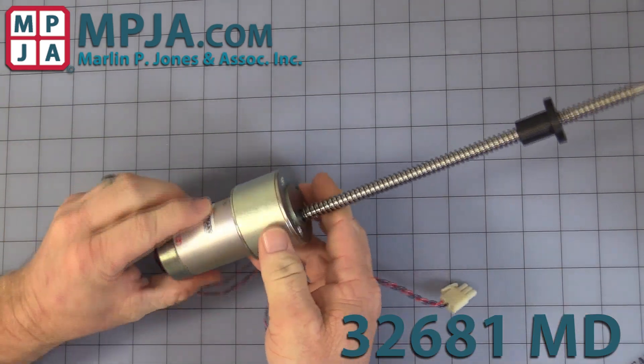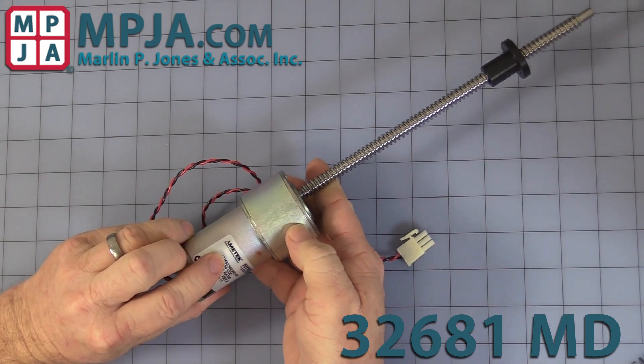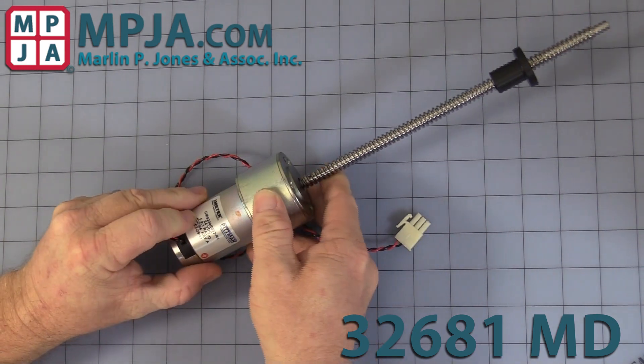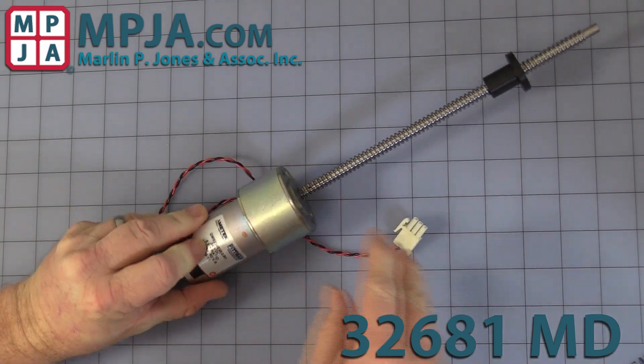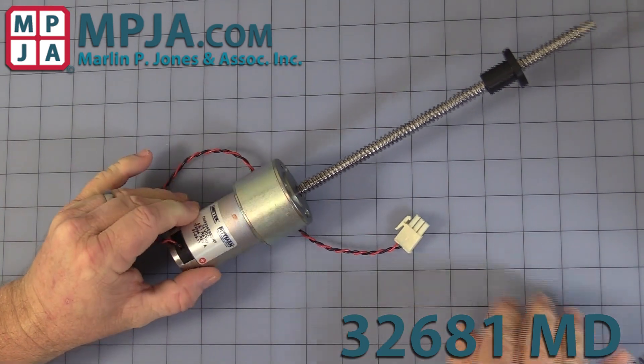To start with, it is a Pittman slash Amtec. It's rated at factory at 24 volt DC, but in fact does run well at 12. We'll get into that in a moment.